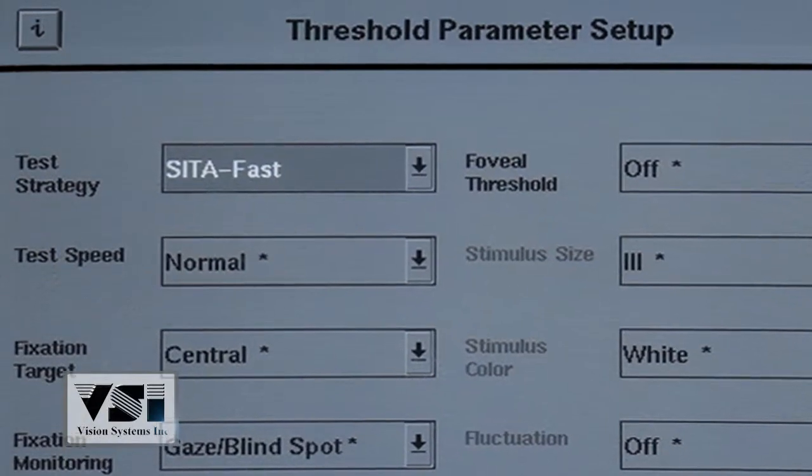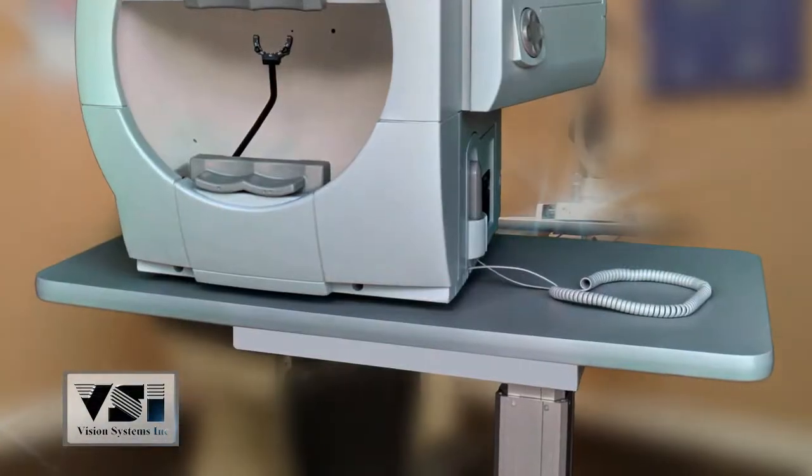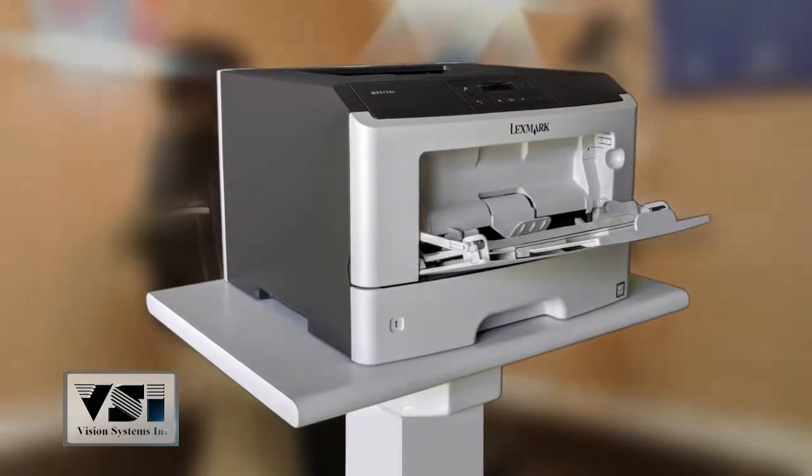SITA Fast can be preset or chosen at the time of the test. Includes power table and upgraded laser jet printer.